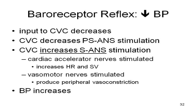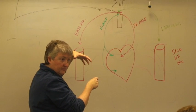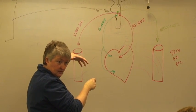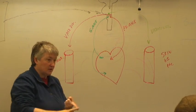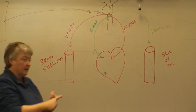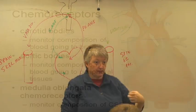The opposite: if blood pressure drops, those baroreceptors signal that there's not enough pressure, and they send fewer signals to the medulla. The medulla responds: increase sympathetic, decrease parasympathetic. Speed the heart up, make it contract more strongly, constrict these blood vessels, and get that blood pressure back up.